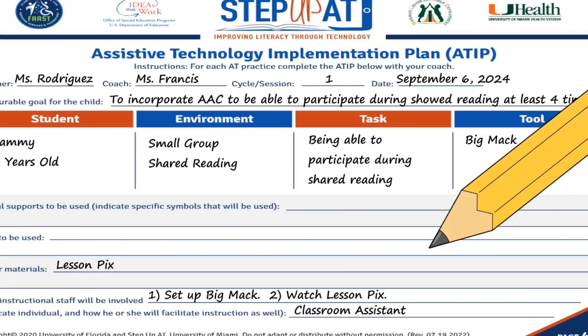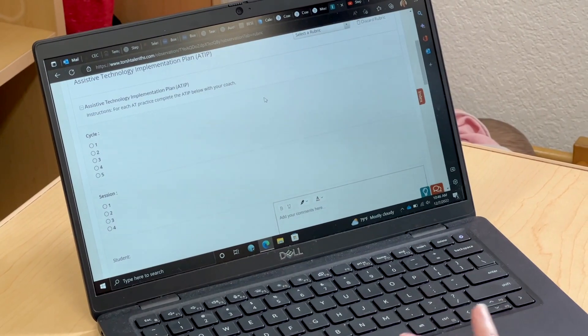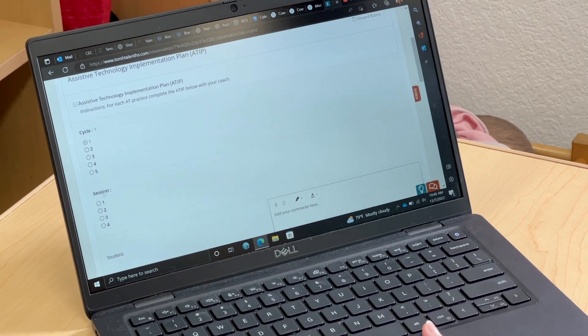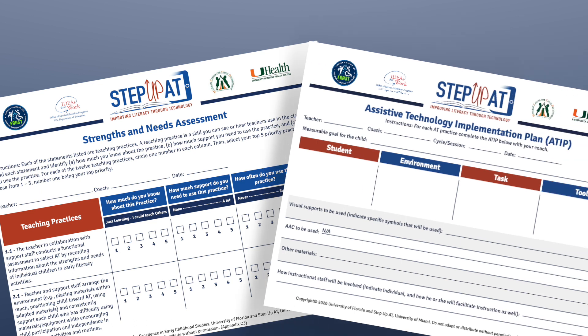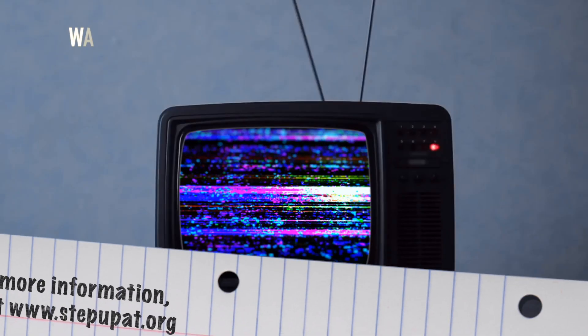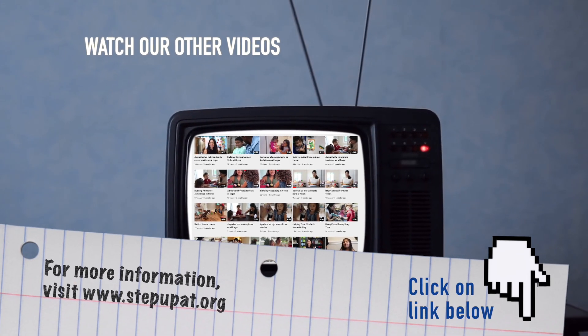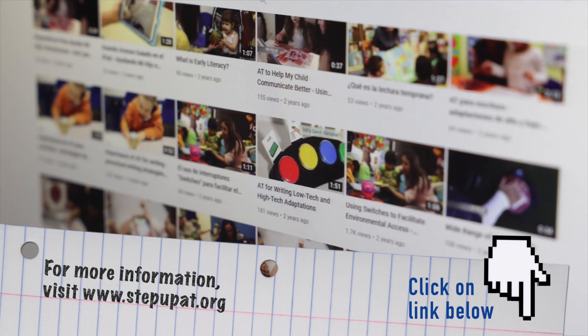The ATIP also considers the types of visual supports and the instructional staff that will be involved to support the proper implementation of the ATIP. Once you have finished the ATIP, the focus goes back to the teacher as you use the TSNA and the ATIP for the third and final piece, the action plan. To learn more about Step Up AT's practice-based coaching, don't forget to check out the rest of our coaching video series by visiting stepupat.org. Thank you for watching.